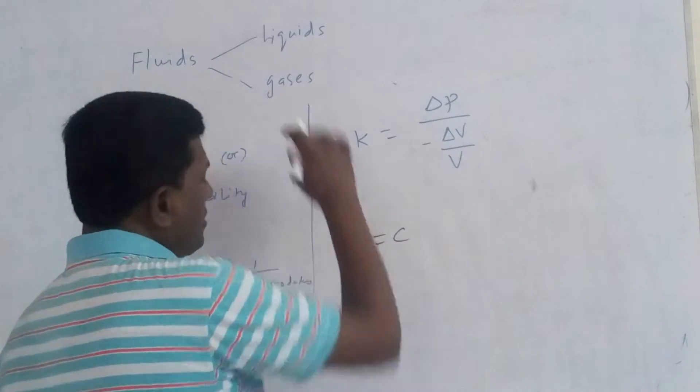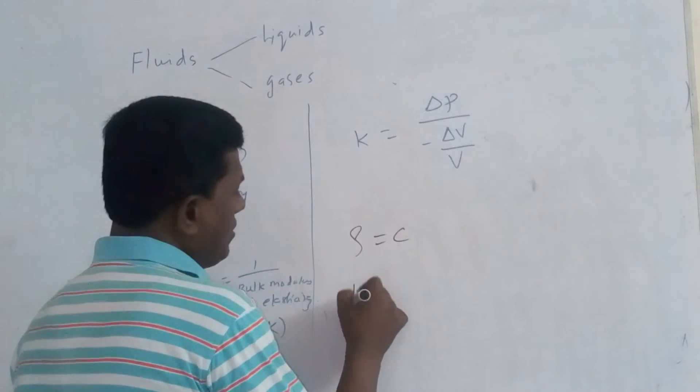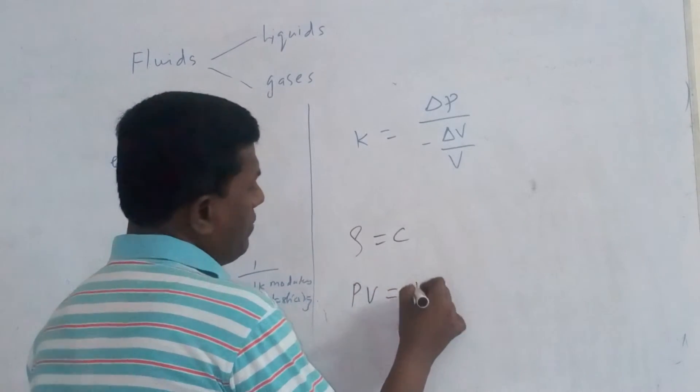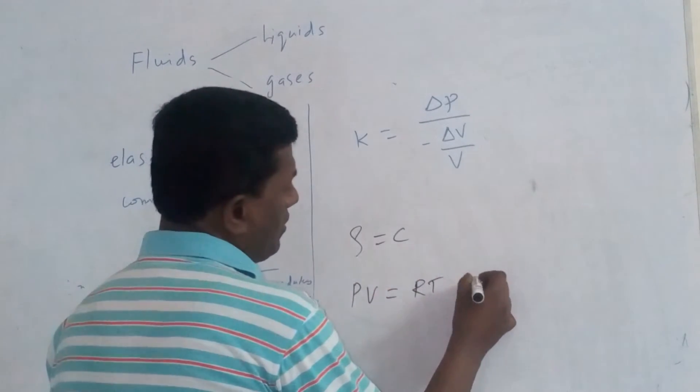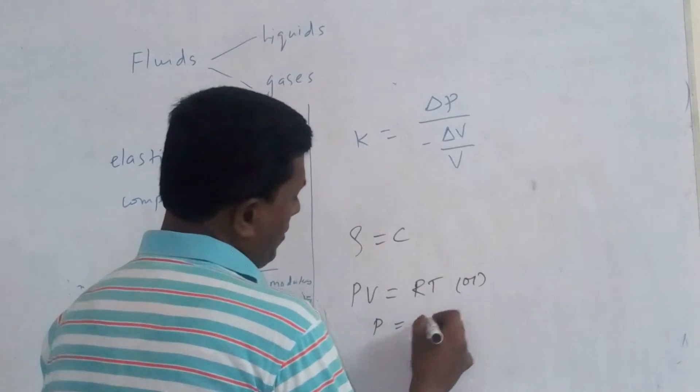Whereas in the case of gases the equation has to be written like this: PV equal to RT or we can write P equal to rho RT.